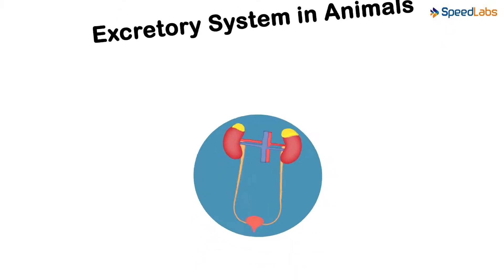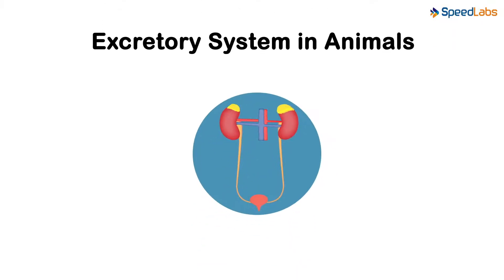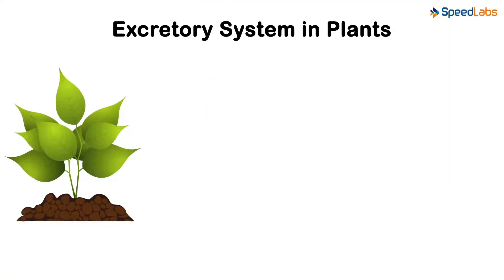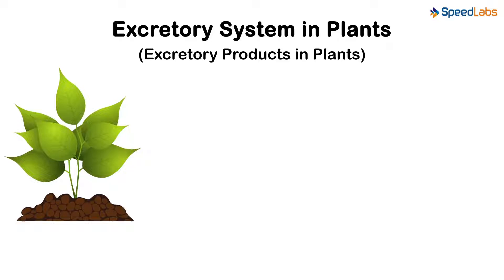We have taken a look at how the excretory system works in animals. So now let's have a look at how it works in plants. But before that, let's make a list of what exactly are the excretory products in plants.